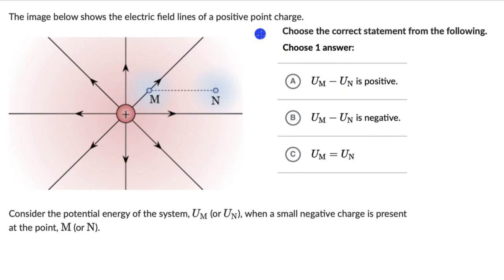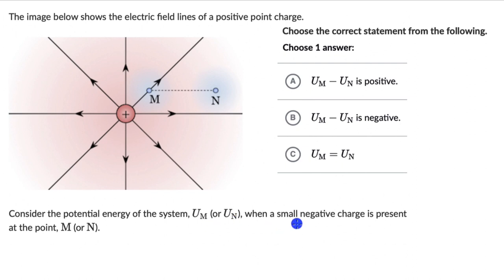Let's solve a question on electric potential energy. The image below shows the electric field lines of a positive point charge. Consider the potential energy of the system Um or Un when a small negative charge is present at point M or N. We need to choose the correct statement from the following.